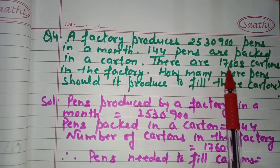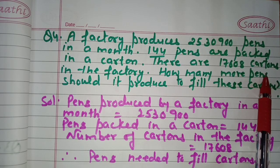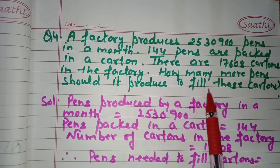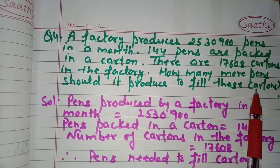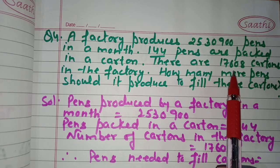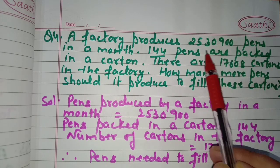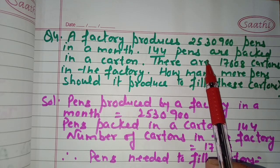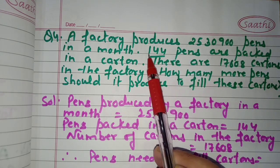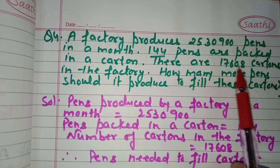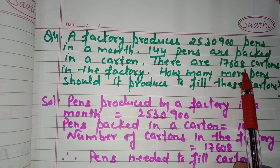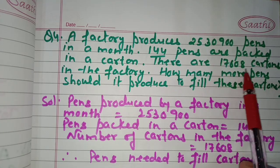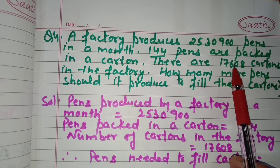Question number four: a factory produces 25,30,900 pens in a month. 144 pens are packed in a carton. There are 17,608 cartons in the factory. How many more pens should it produce to fill these cartons? Pens per carton: 144, and total cartons: 17,608.